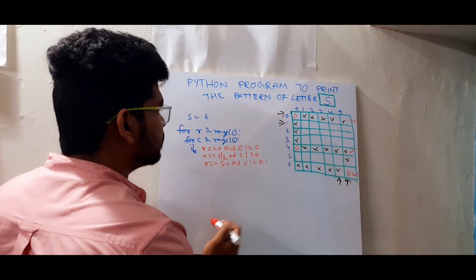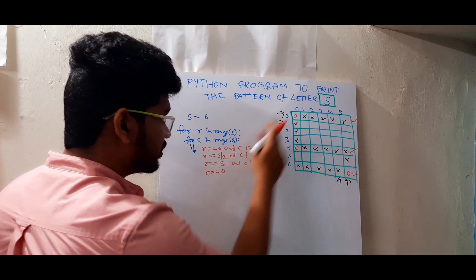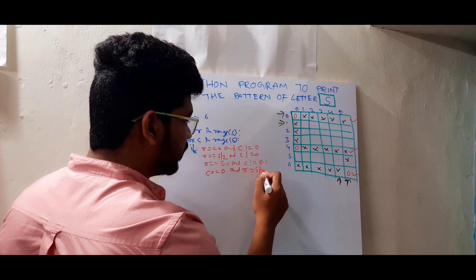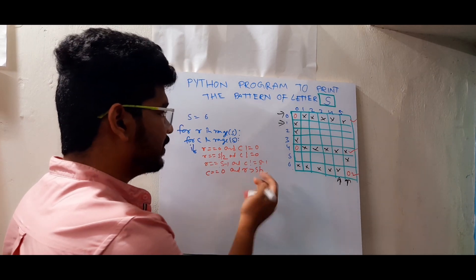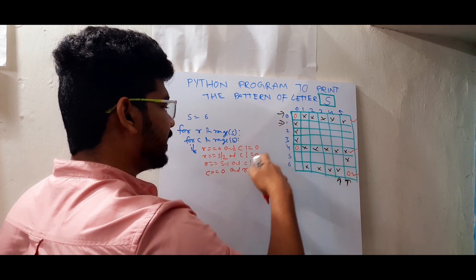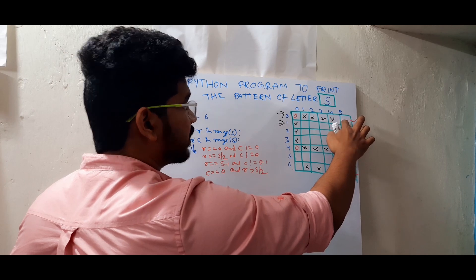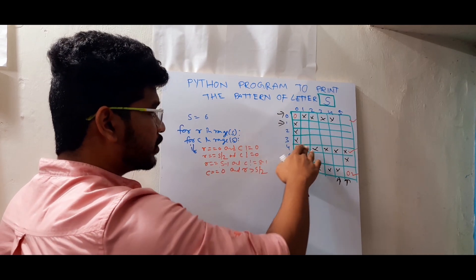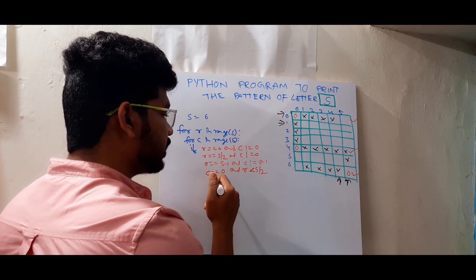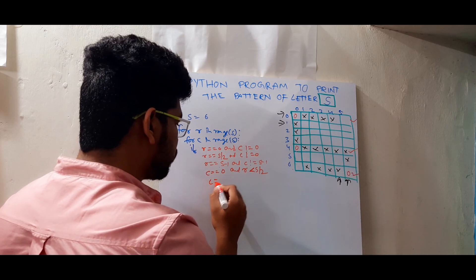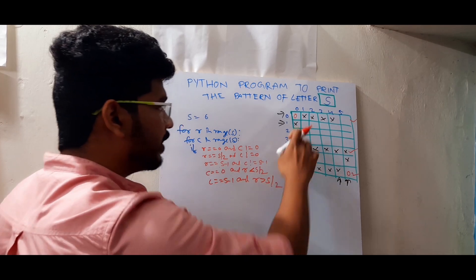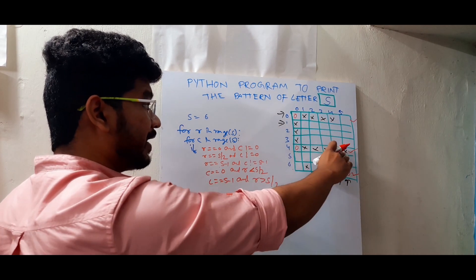For the first column: if column equals zero and the row is less than s divided by 2 — so it prints only the first half of the first column. If row is greater than s by 2, it excludes the star. Similarly, for the last column: column equals s minus one and row should be greater than s divided by 2, printing only the lower half.